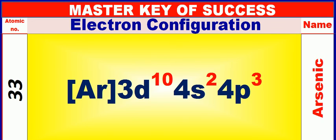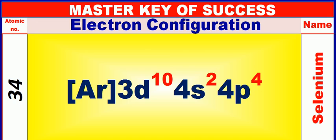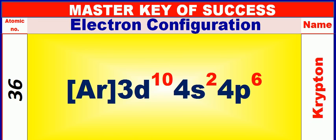Atomic number is 33 and name of atom is Arsenic. Atomic number is 34 and name of atom is Selenium. Atomic number is 35 and name of atom is Bromine. Atomic number is 36 and name of atom is Krypton.